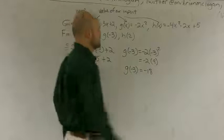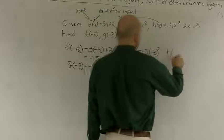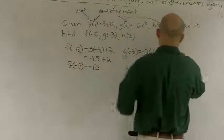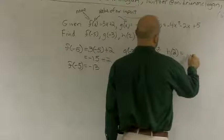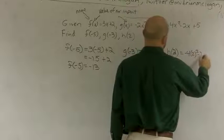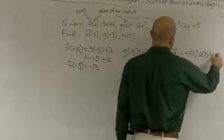And then finally, the last problem. I have h, which is h of 2 they want me to figure out, equals negative 4 times 2 squared minus 2 times 2 plus 5.